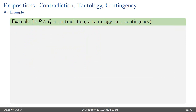Let's look at an example. We'll pick an easy-to-work-with formula, but we can substitute it with any well-formed formula in the language of propositional logic. So let's ask: is P ∧ Q a contradiction, tautology, or contingency?